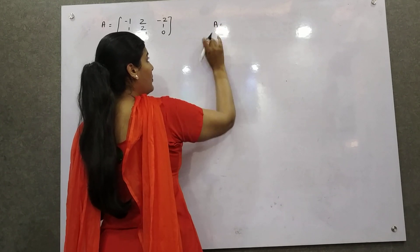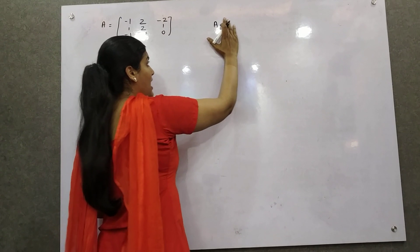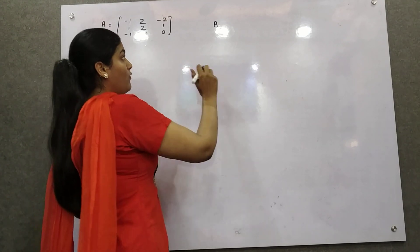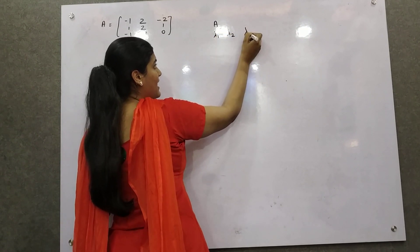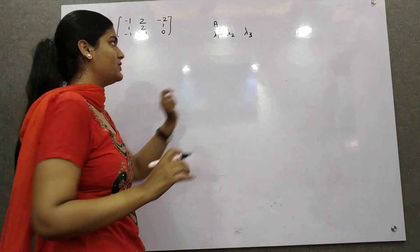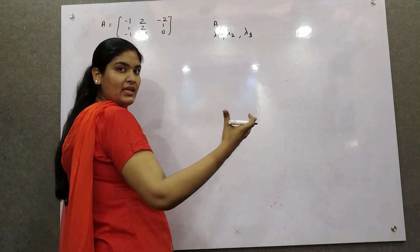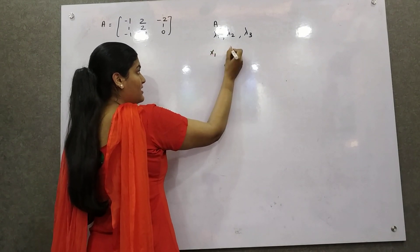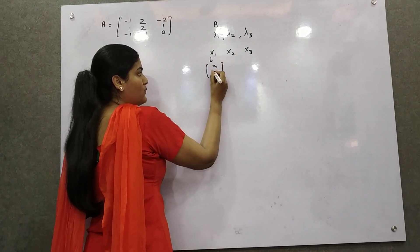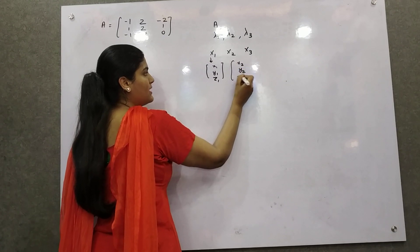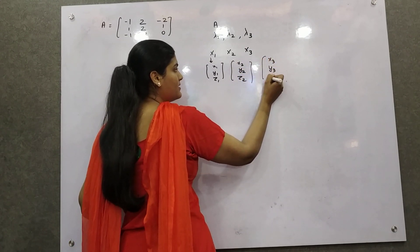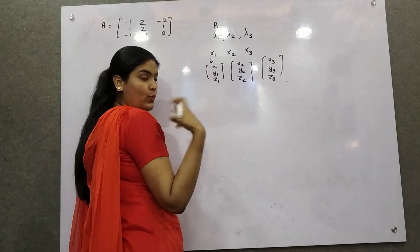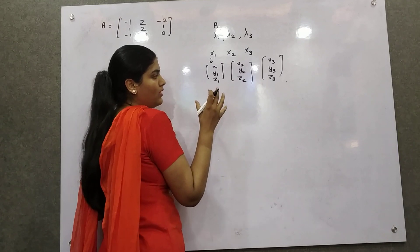Let's say you have a particular matrix A, the parent matrix. If you want to find out the diagonalization or reduce this matrix into diagonal form, you find out — let's say it has three eigenvalues: lambda 1, lambda 2, lambda 3. Similarly, if you form the characteristic equation and find out eigenvalues, you will have eigenvalues as well.